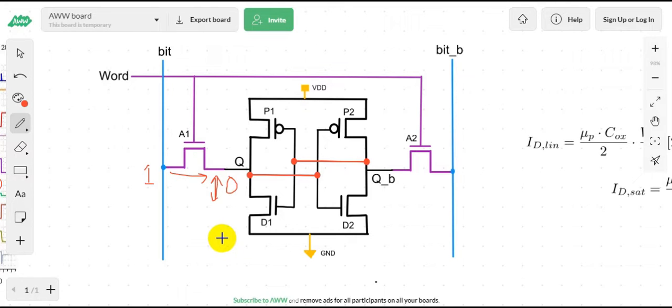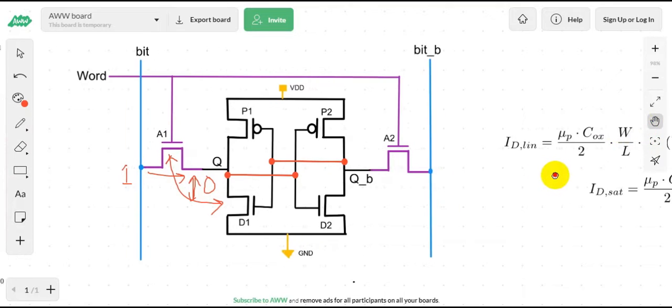D1 needs to be stronger than A1. That means the current flow from Q to D1 must be greater than the current flow from A1 to Q. If we look at the current equation...